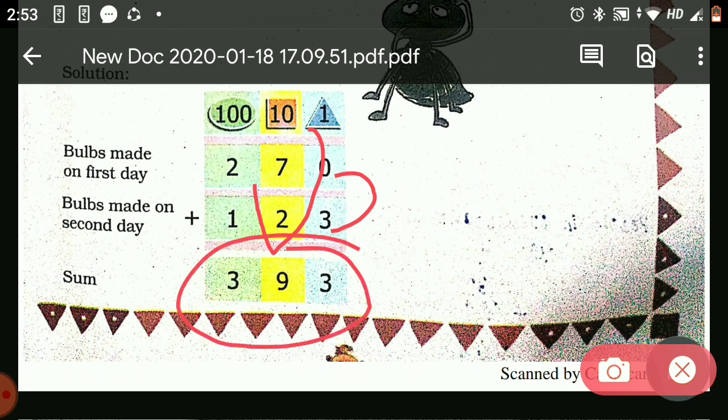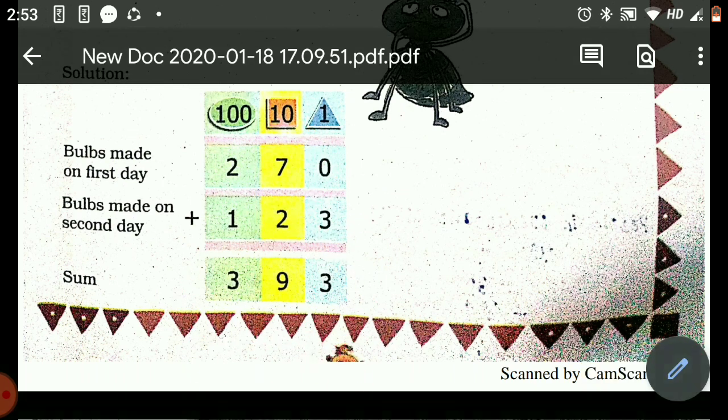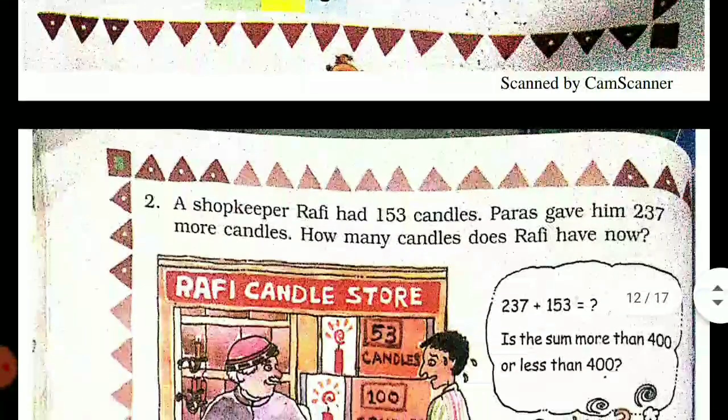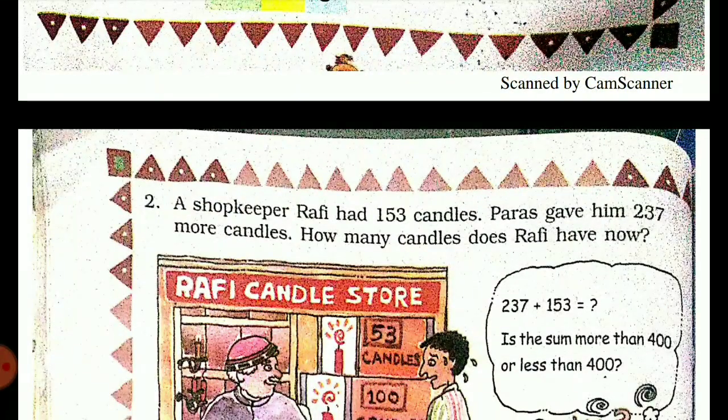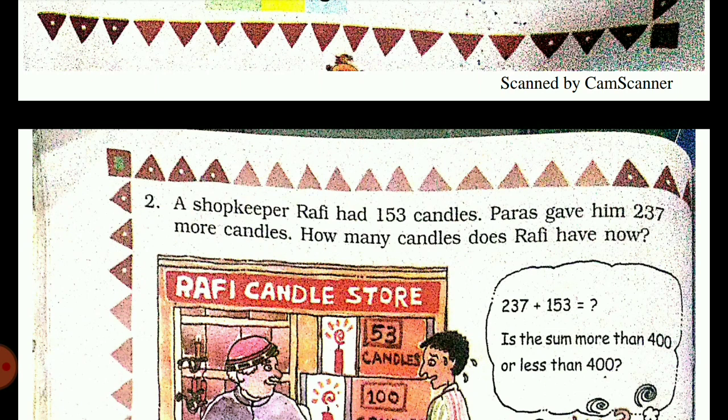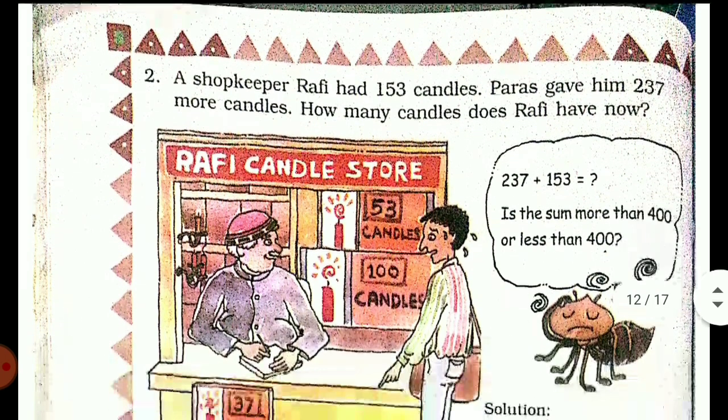Next, a shopkeeper Rafi had 153 candles. Paras gave him 237 more candles. How many candles does Rafi have now? So you have to add 153 and 237.